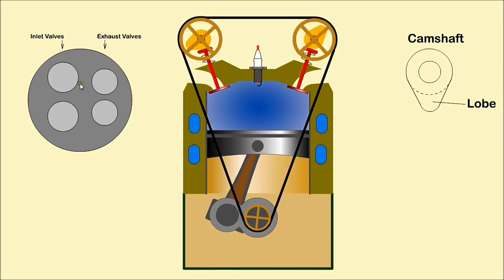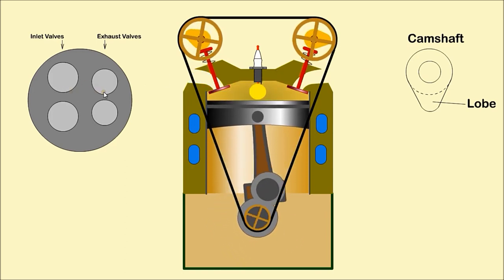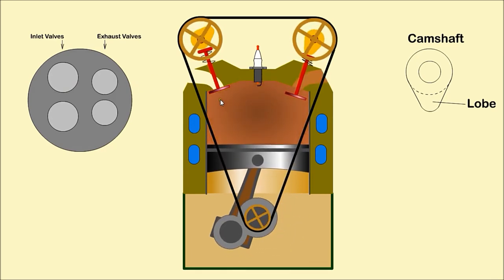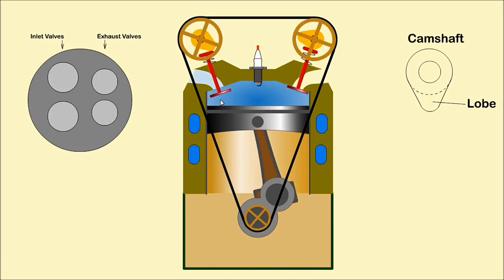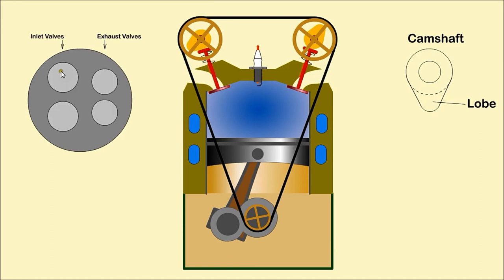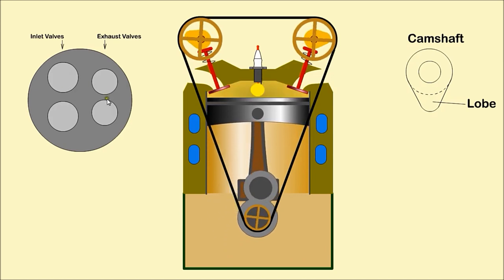Early engines had only one inlet and one exhaust valve per cylinder. Modern engines usually have two inlet and two exhaust valves.